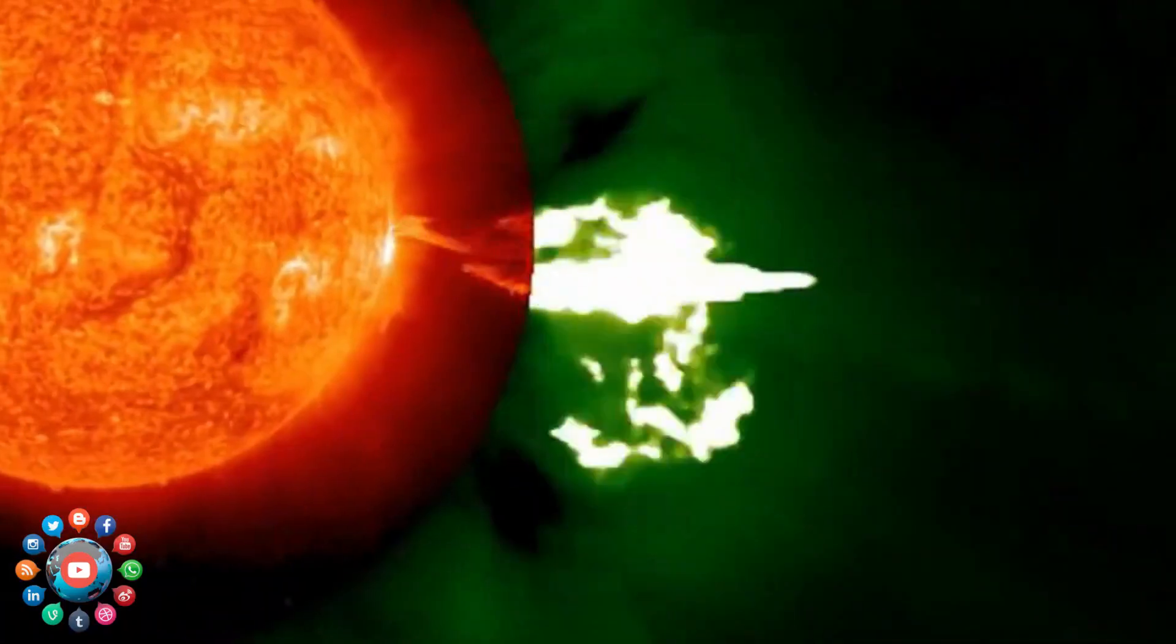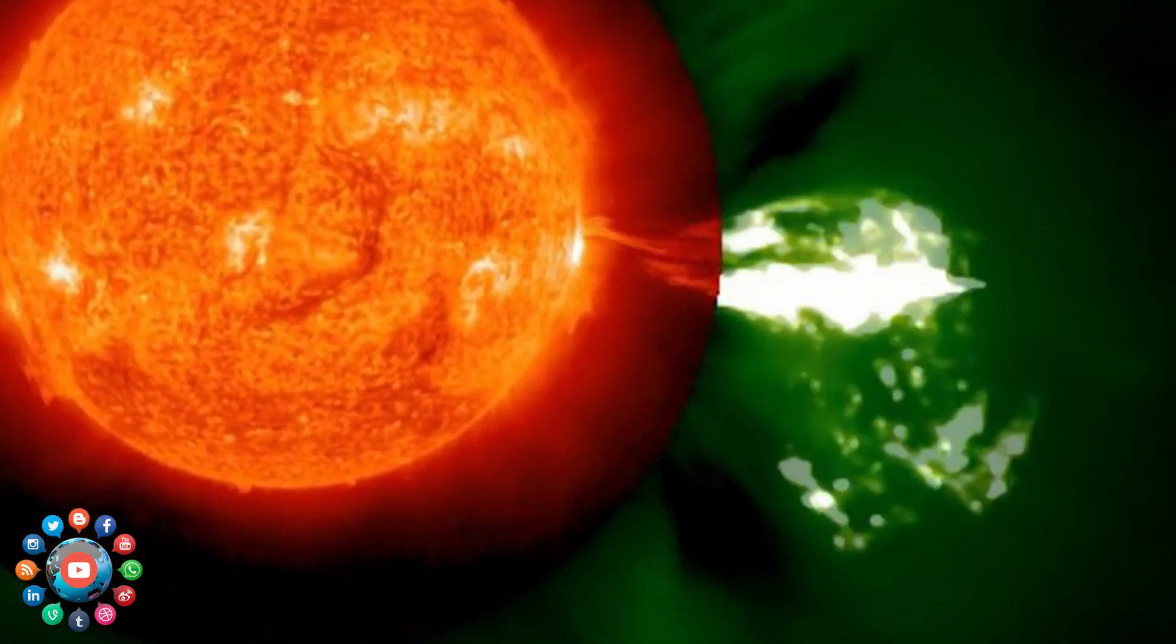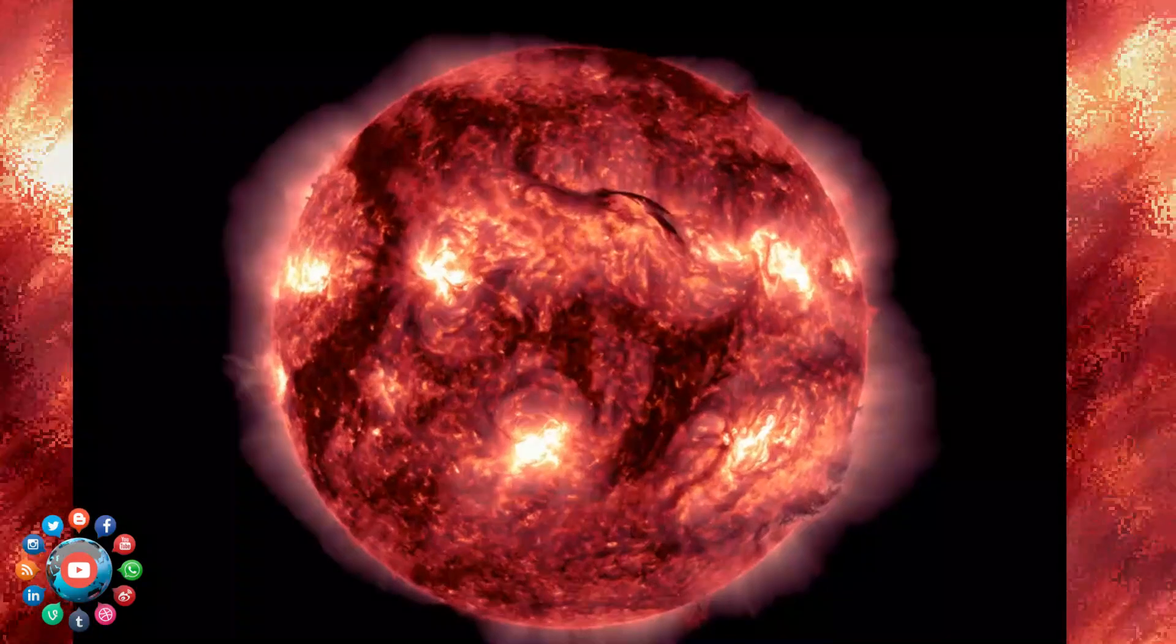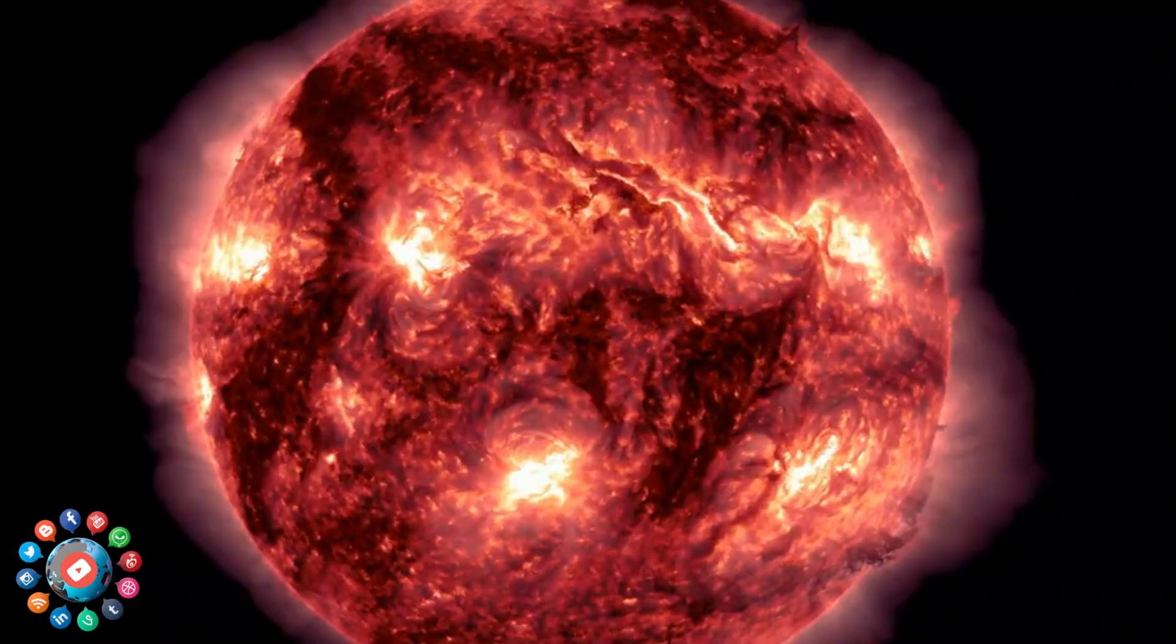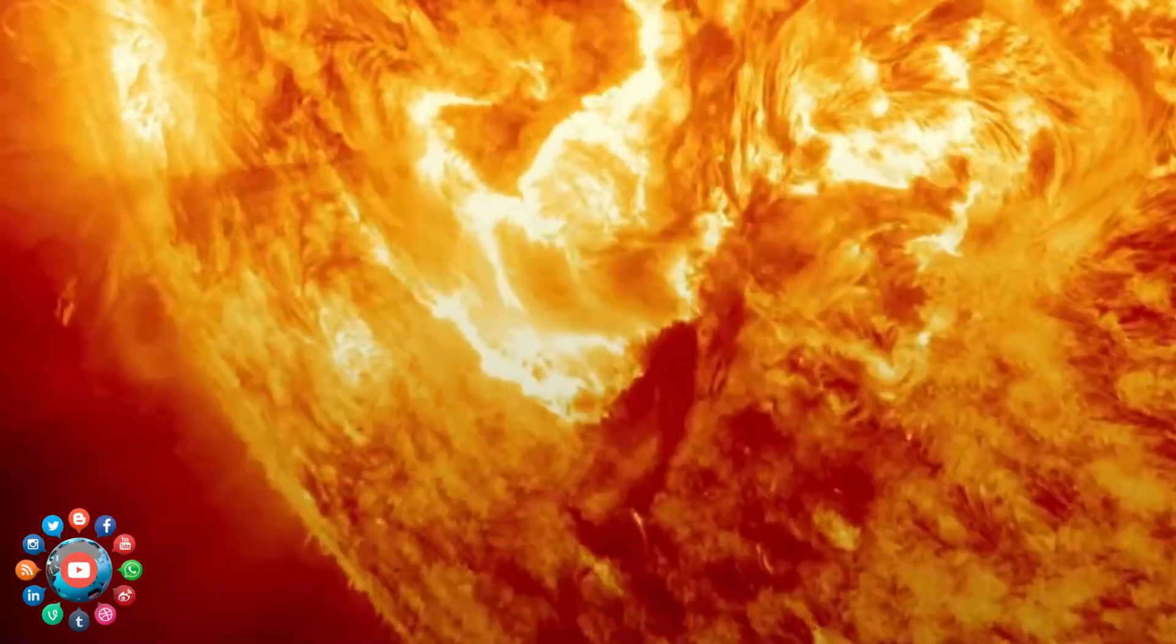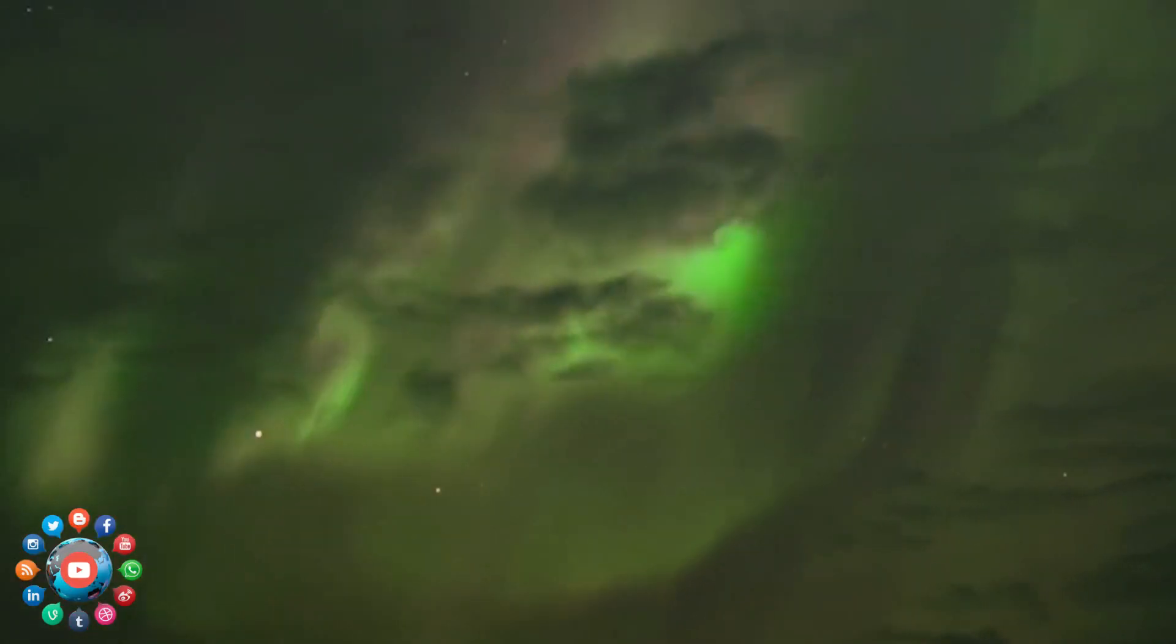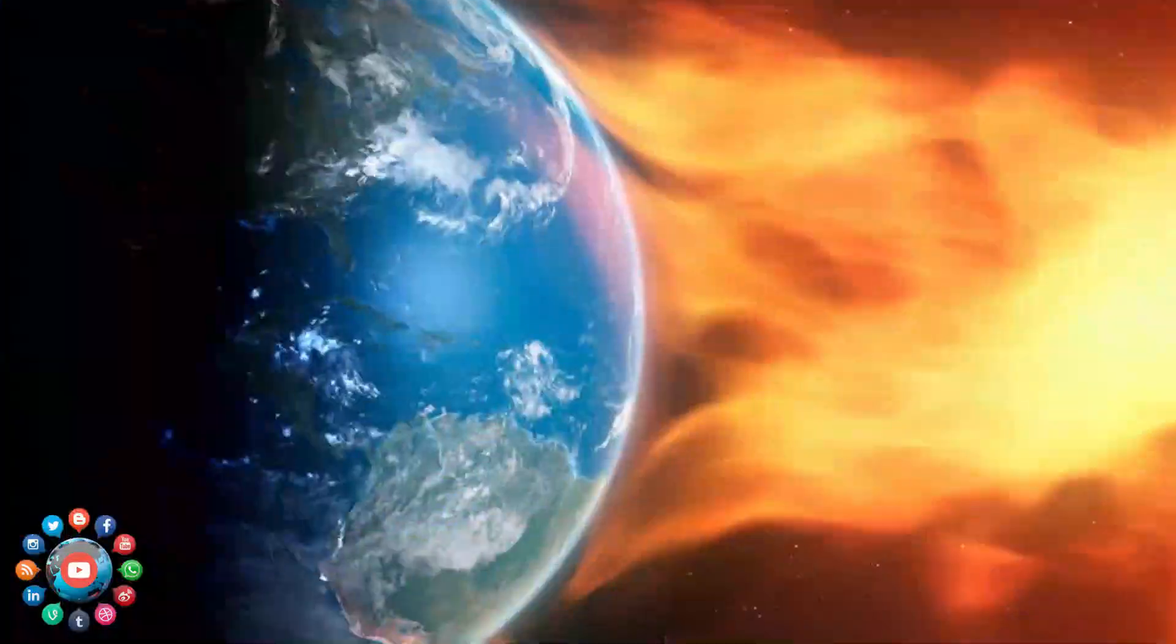A solar flare is defined as an intense burst of radiation caused by the release of magnetic energy from sunspots. Solar storms form as a result of explosions in the Sun's atmosphere, which subsequently send forth massive bursts of energy in the form of solar flares, also known as coronal mass ejections.